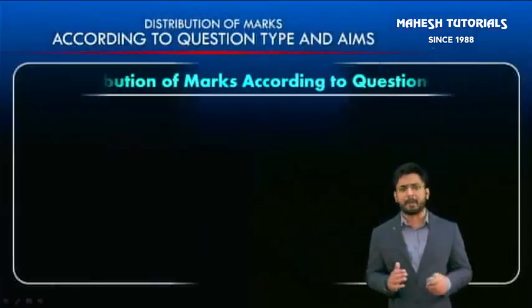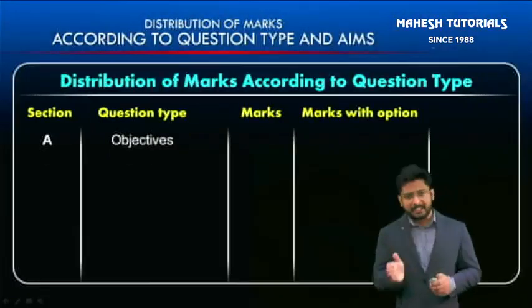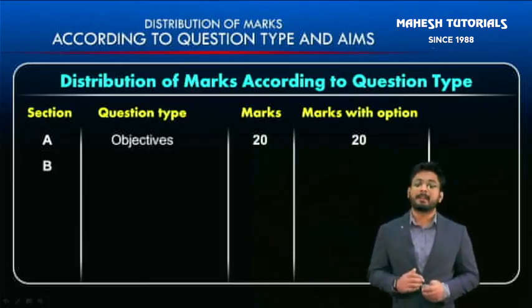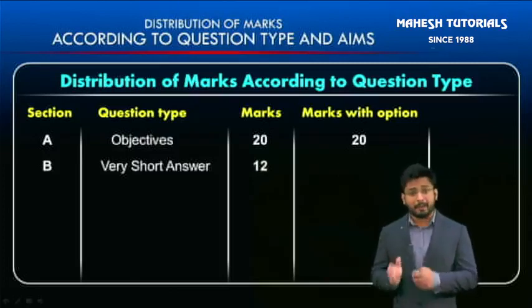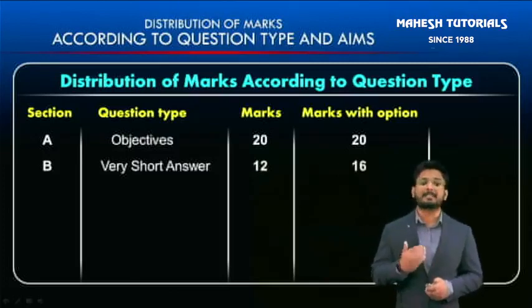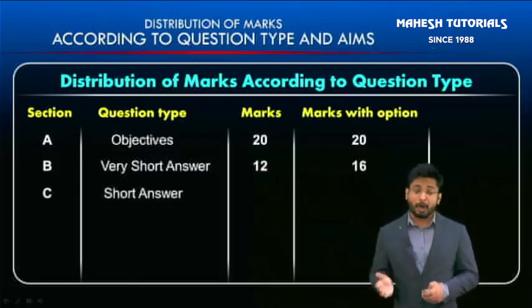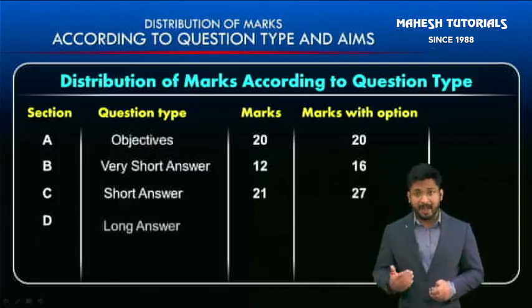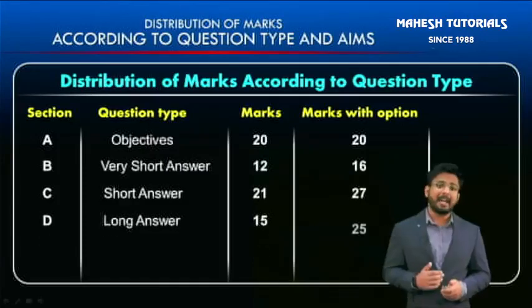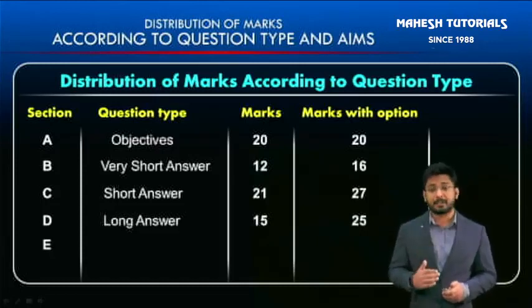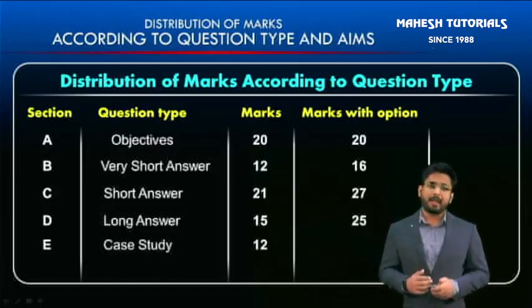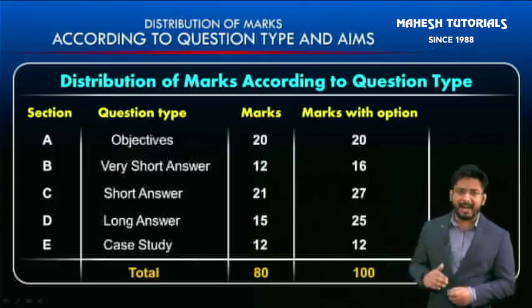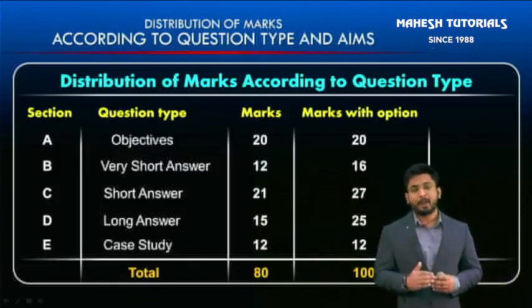In summary: Section A has objective questions worth 20 marks with no internal choices. Section B has very short answer type questions worth 12 marks, becoming 16 marks with options. Section C short answer type totals 21 marks, becoming 27 with options. Section D long answer type totals 15 marks, becoming 25 with options. Section E case study based totals 12 marks with no options, making the grand total 80 marks — or 100 marks with all options.